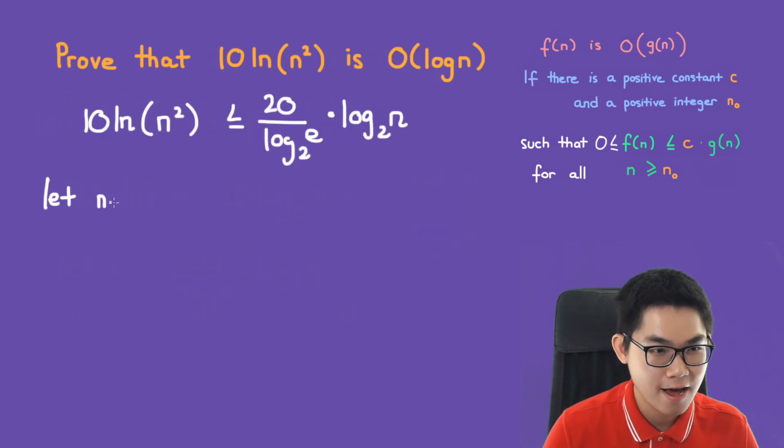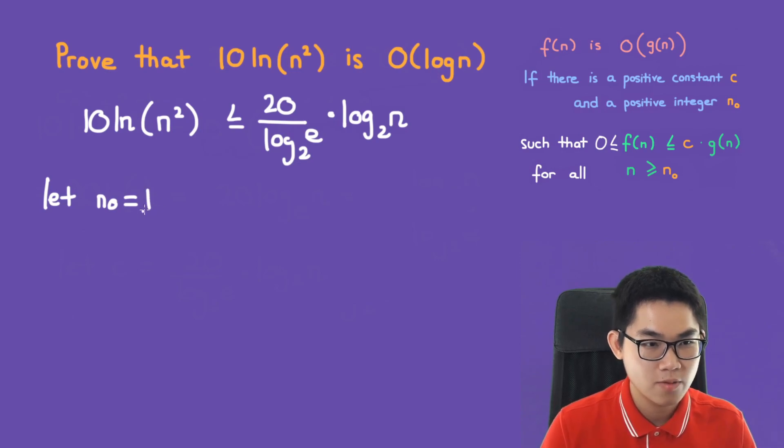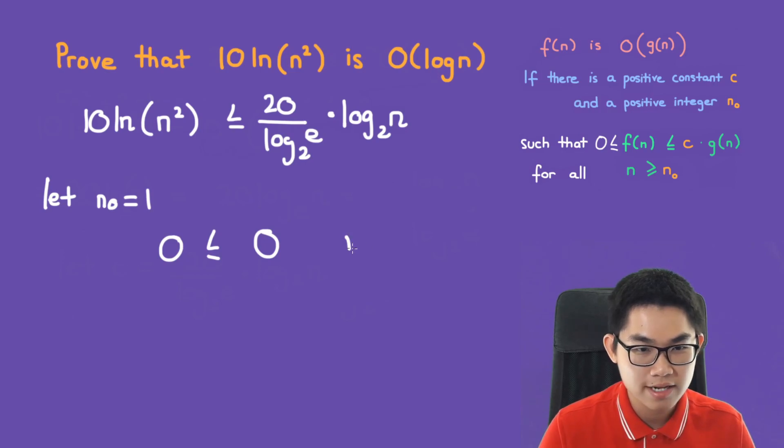Let n naught equal to 1. So plugging 1 into the n here, we have 10 times the ln of 1 squared. And the ln of 1 is 0, so we have 0 over here. And the same thing over here, so log base 2 of n where n is 1, this will be 0. So this inequality is true.